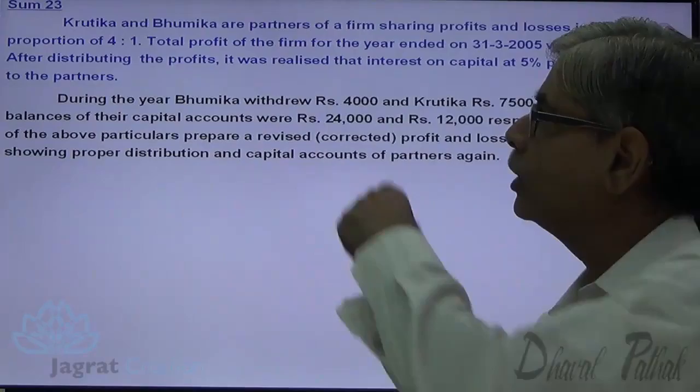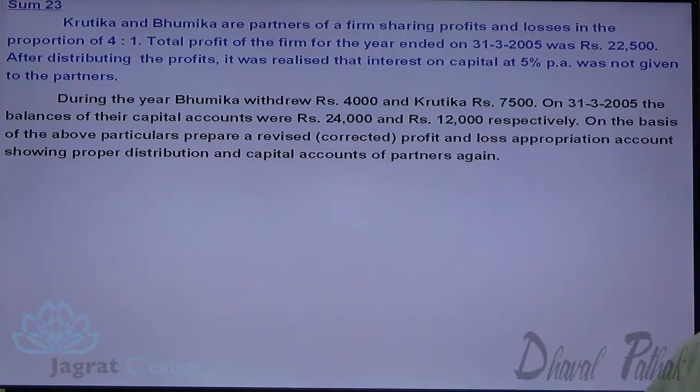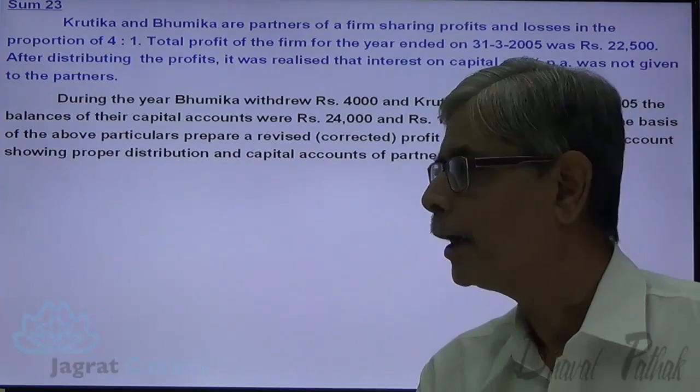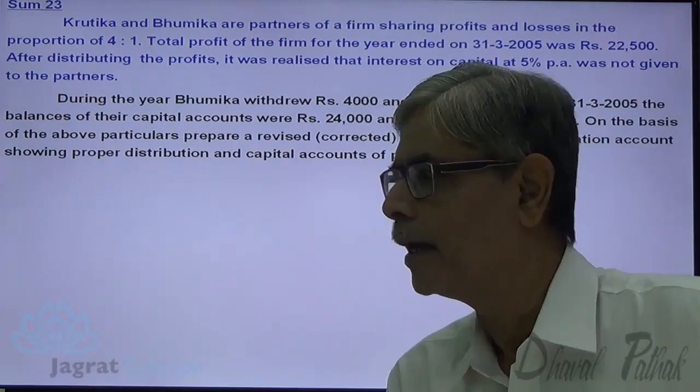Now I wish to start with one sum on partnership accounts. Observe the sum on the screen. Krutika and Bhumika are partners of a firm sharing profits and losses in the proportion of 4 is to 1. Total profit of the firm for the year ended on 31st March 2005 is ₹22,500.